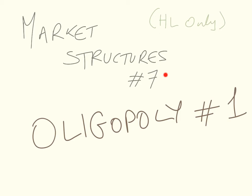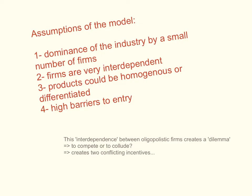This is video number 7 of the market structures series in the IB Economics higher level only microeconomics component. This will be part 1 of oligopoly as a market structure.